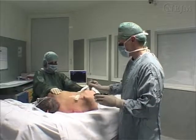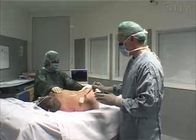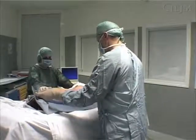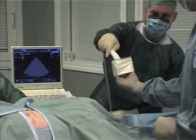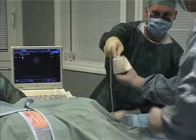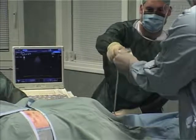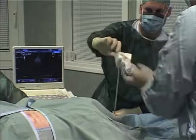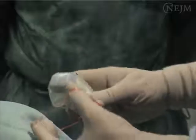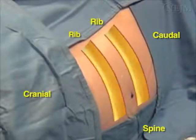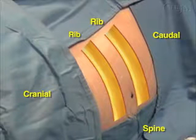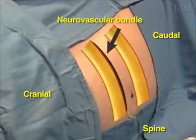Using gauze soaked in a sterile disinfectant preparation, thoroughly disinfect the skin and place the sterile drapes around the selected site. Prepare the probe: with the help of a second operator, apply ultrasound gel to the probe and cover it with a sterile sleeve, then secure the sleeve to the probe. The needle must be inserted in the intercostal space on the top of the inferior rib in order to avoid the neurovascular bundle, which lies beneath the lower edge of the rib.